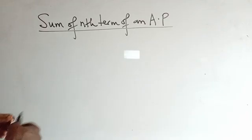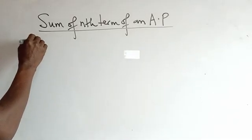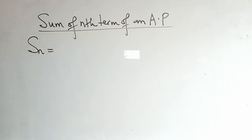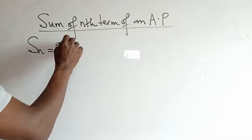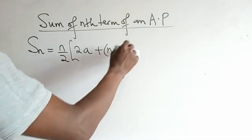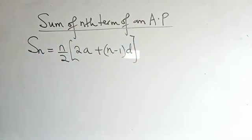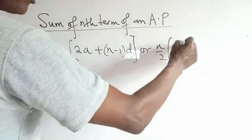Now, if we are given an arithmetic progression, how do we find the sum of n terms? Generally, the sum of n terms of an arithmetic progression is denoted by the symbol Sn, and the formula is: Sn = n/2 × (2a + (n−1)d). Or you can also write it as n/2 × (a + l).